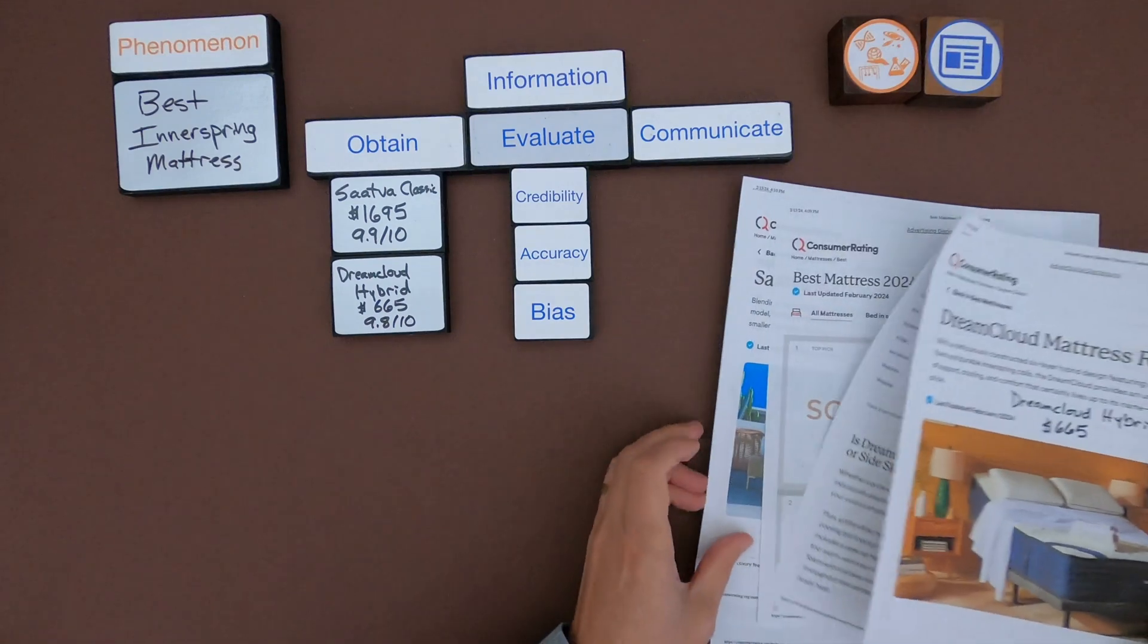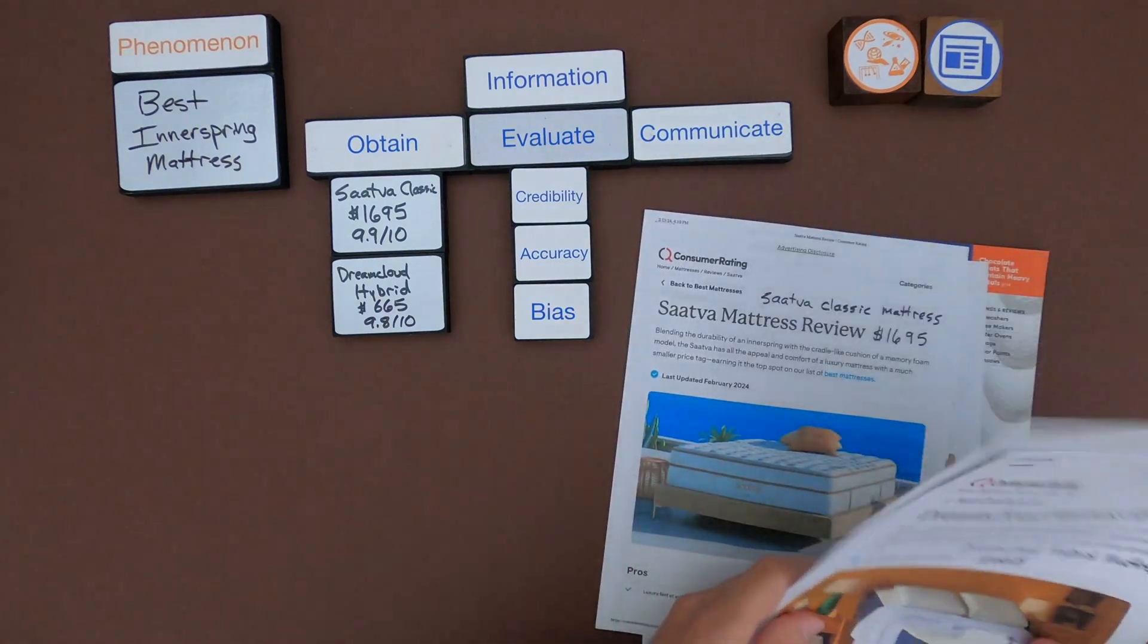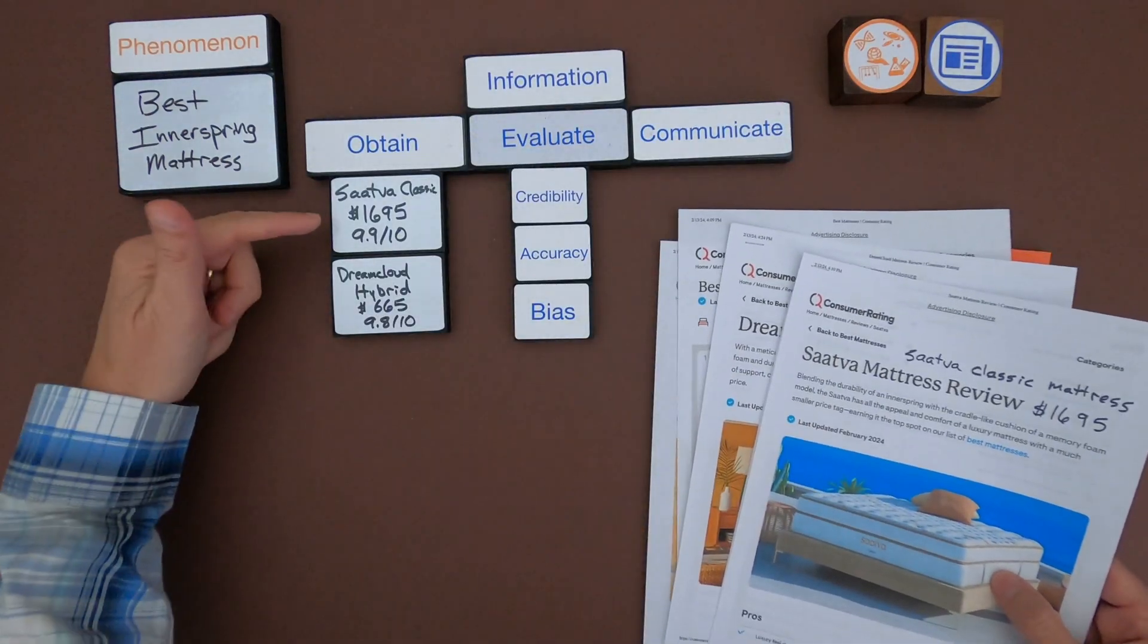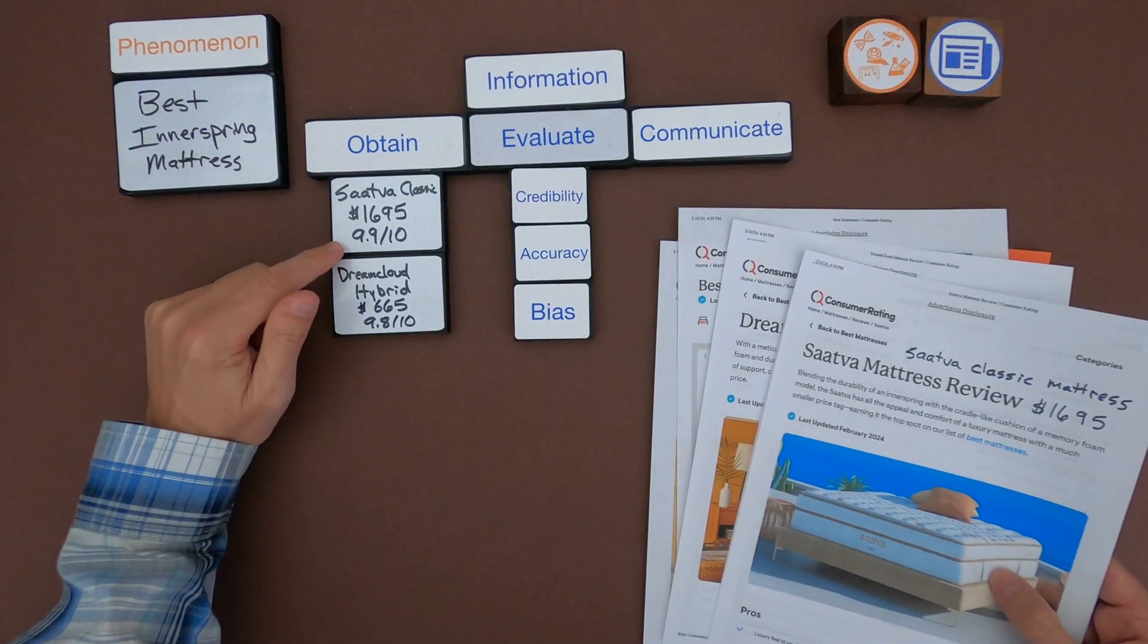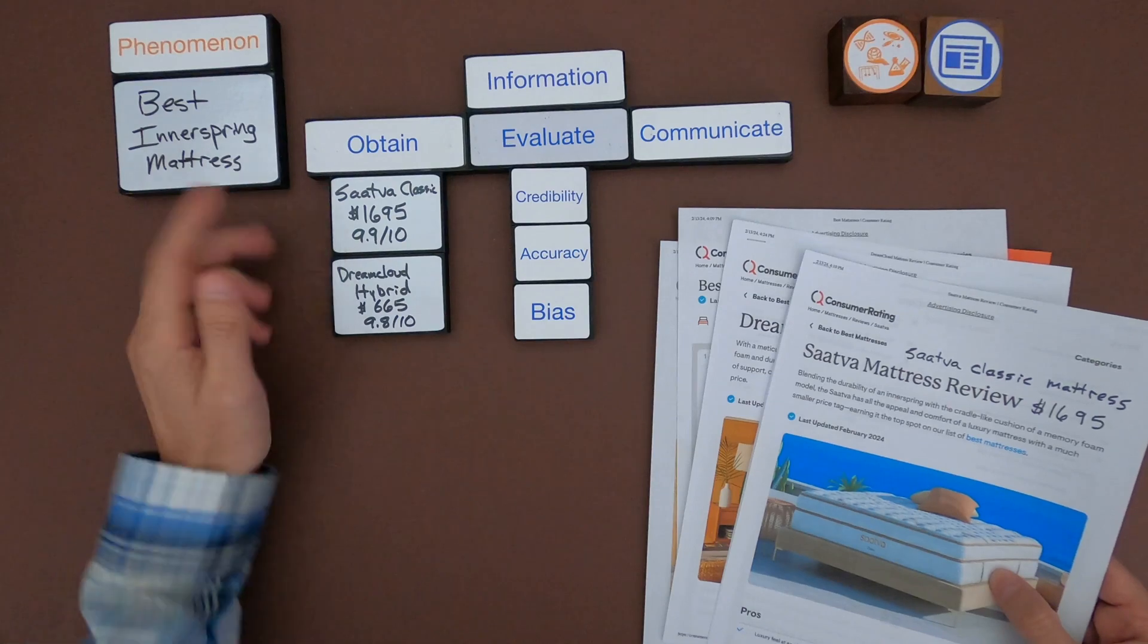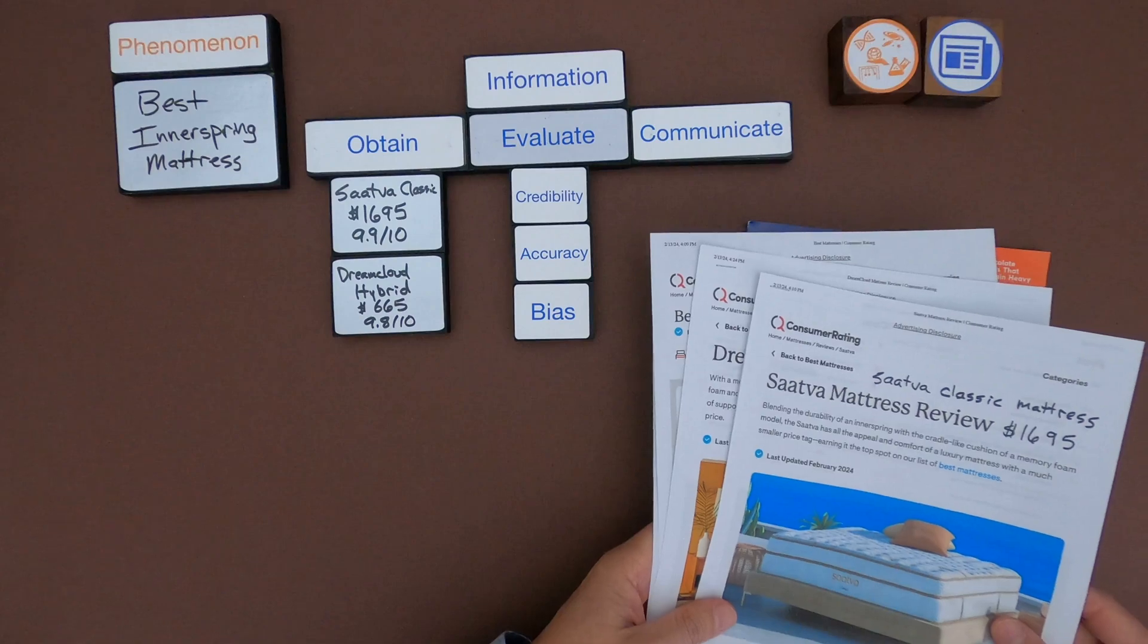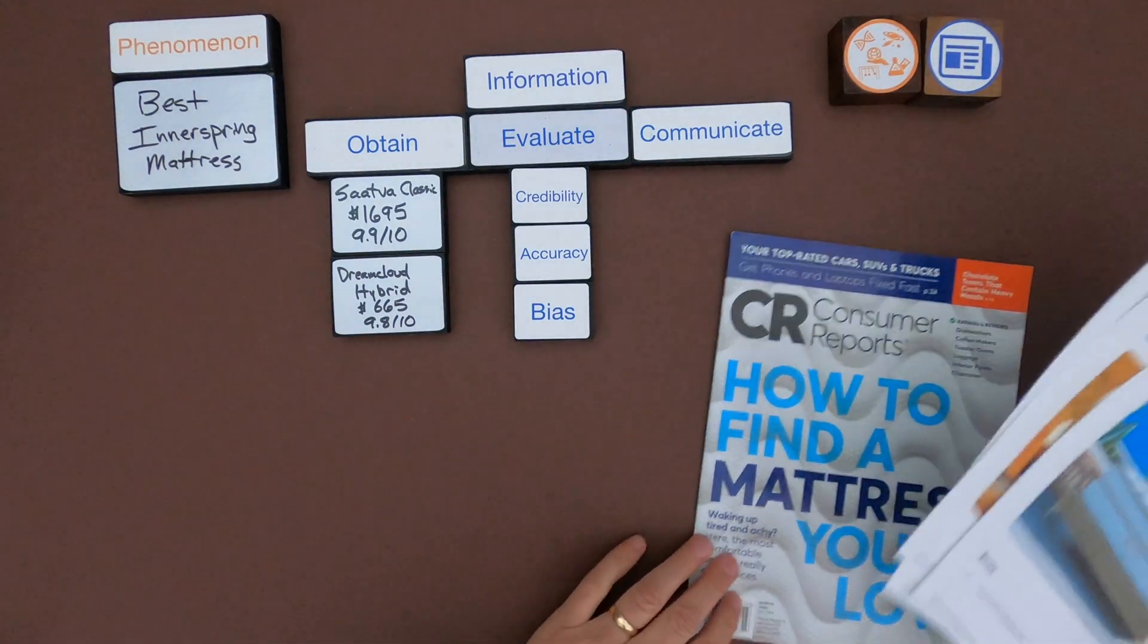So from the first source, the consumer rating, I've got my two mattresses, both the Saatva and the DreamCloud. The Saatva is more expensive at $1695, but has a higher rating. And so I'm just listing all the information that's here. And then the next thing I want to do is I want to look at the second source.